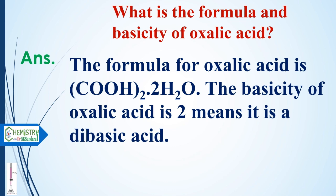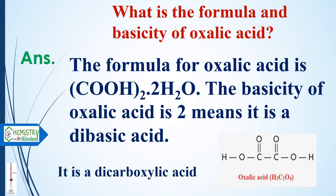What is the formula and basicity of oxalic acid? The formula of oxalic acid is (COOH)2, and since it is a hydrated salt, two water molecules are attached. The basicity of oxalic acid is two — meaning it is a dibasic acid where two hydrogens can be replaced. It is also a dicarboxylic acid because it contains two –COOH groups.